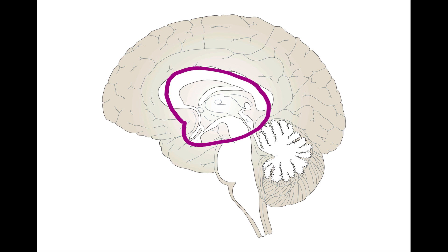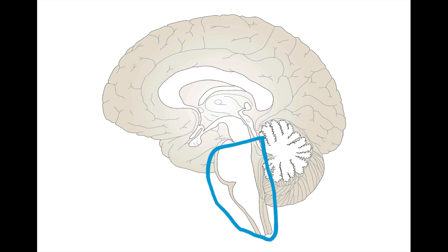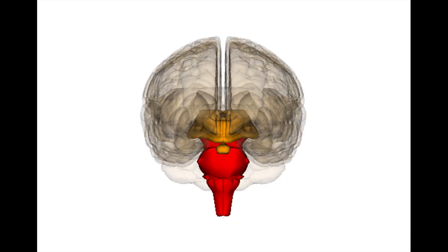Welcome back. Now that we've learned about both cortical and subcortical strokes, let's move down to the brainstem. With brainstem strokes, localization starts to become much more complicated. But before we get into these specifics, first things first — how do we even know that we're dealing with a brainstem stroke in the first place?